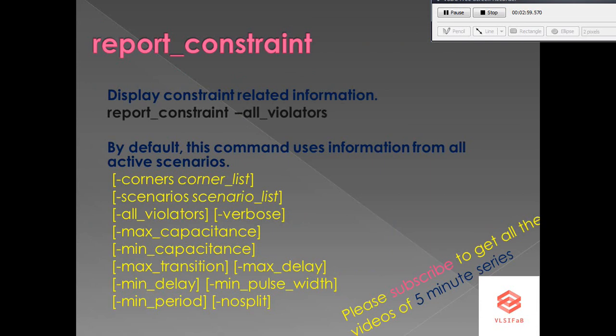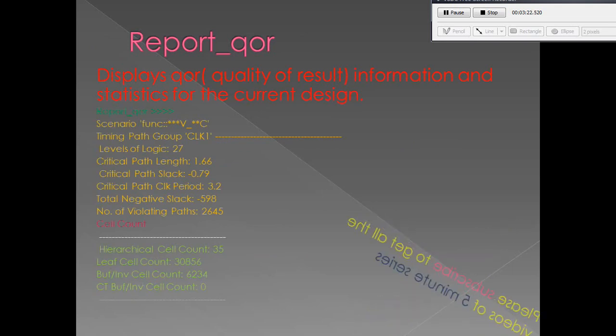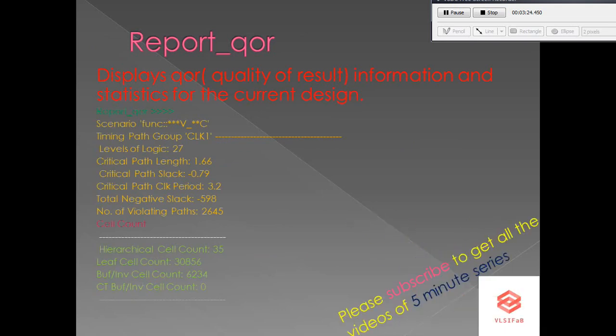The report_constraints command reports parameters in the current design such as WNS, total negative slack, and DRC violations. The report includes whether constraints are violated, by how much, and the worst violating object. You can check this using the report_constraints command and its available arguments.